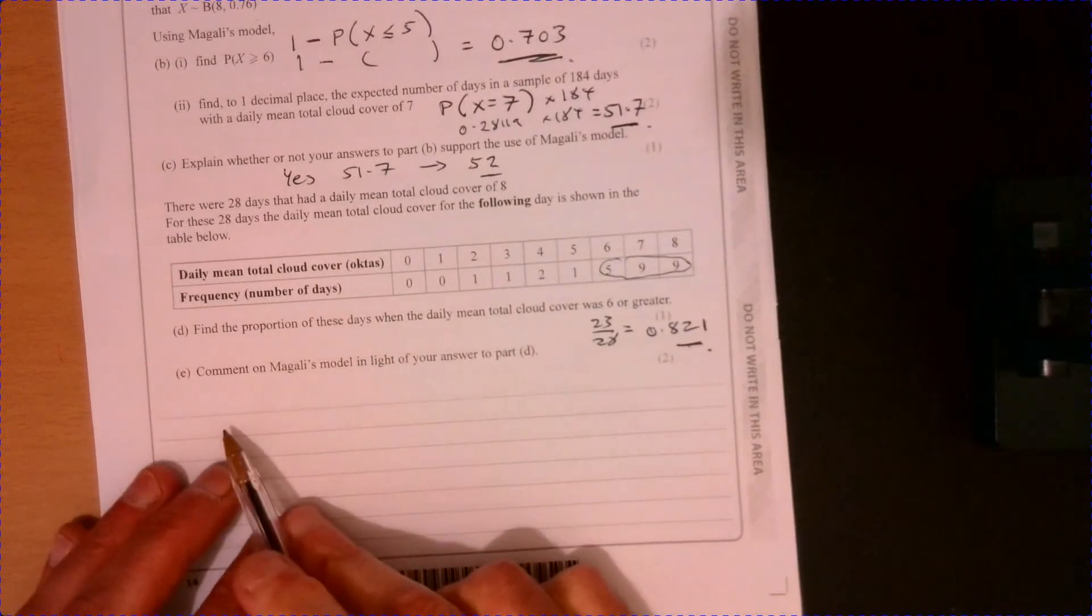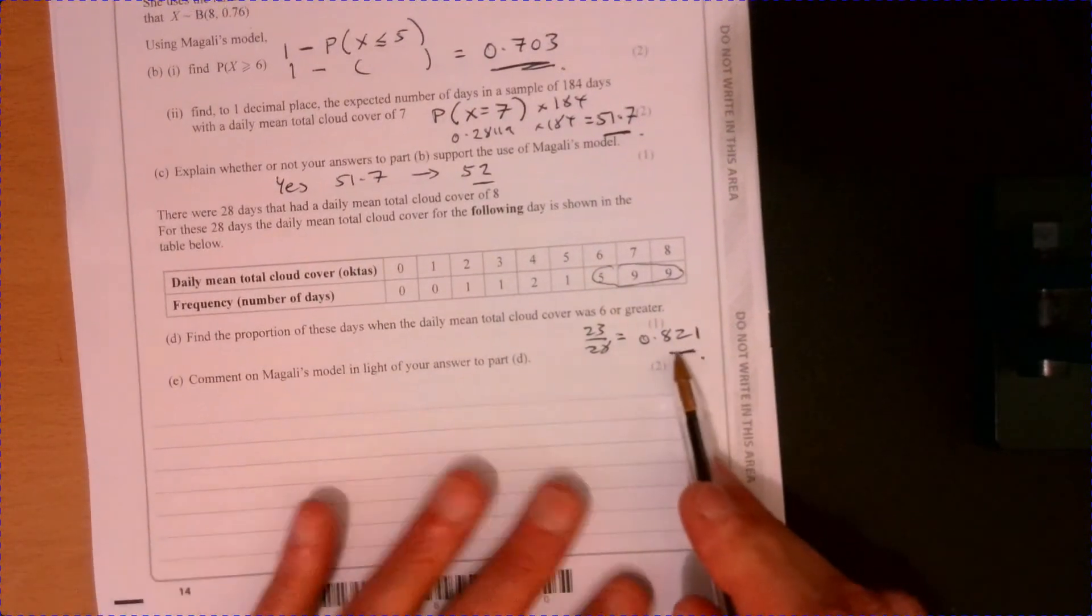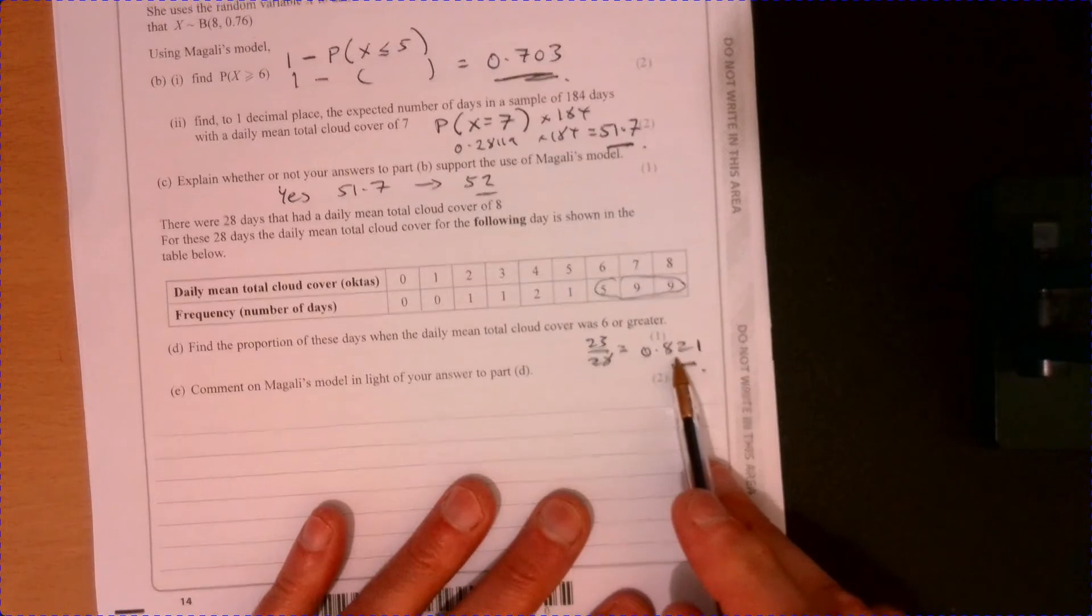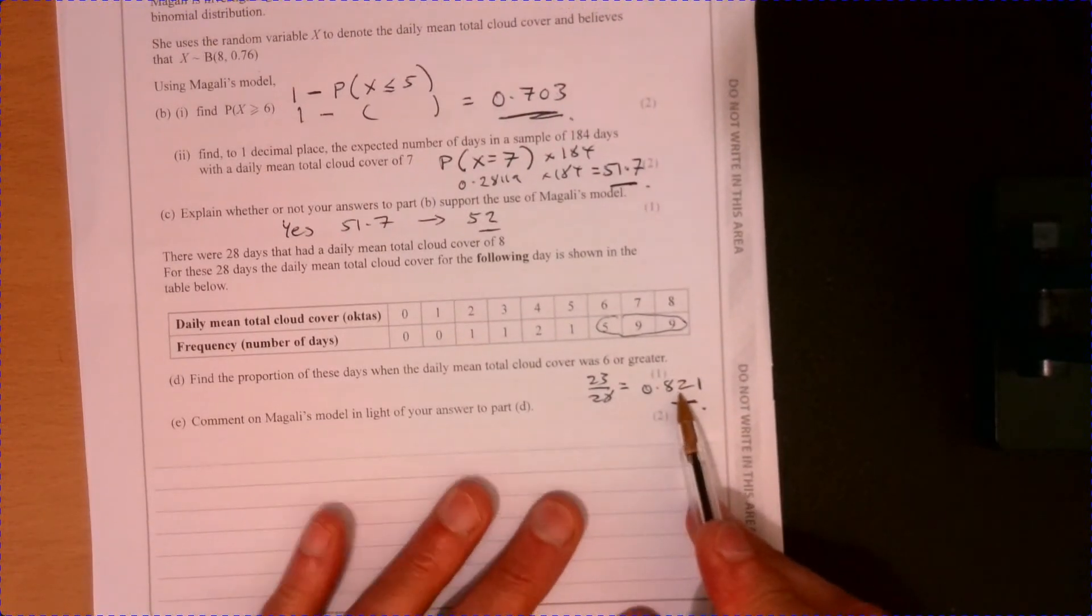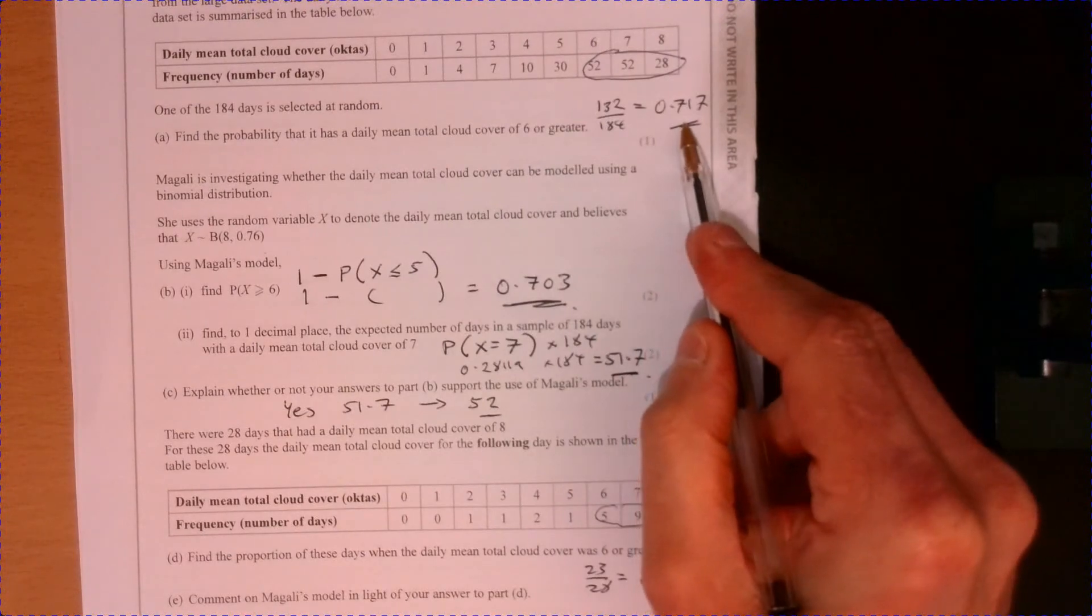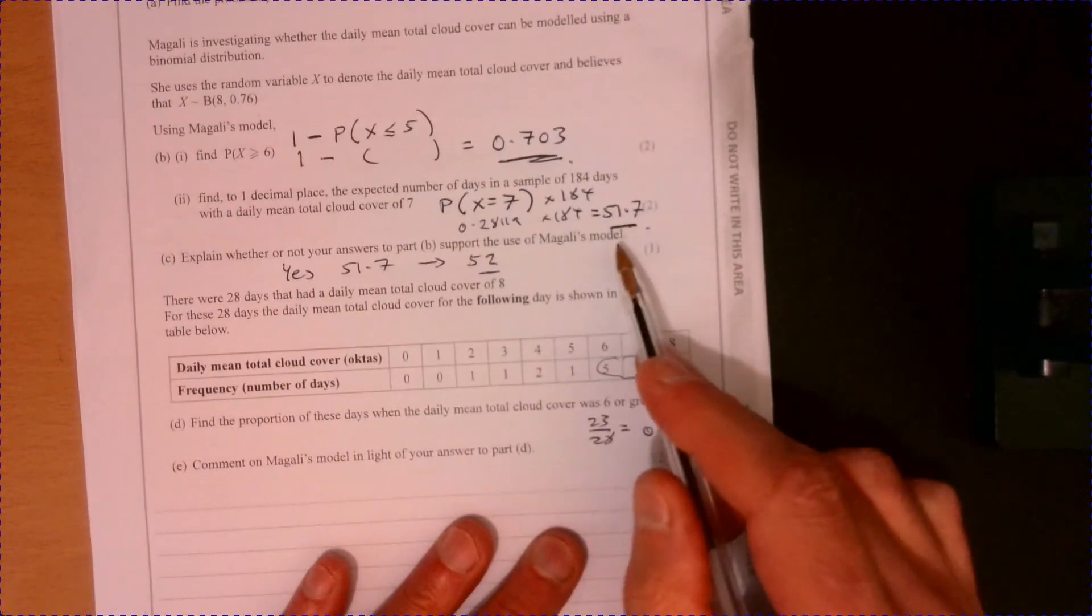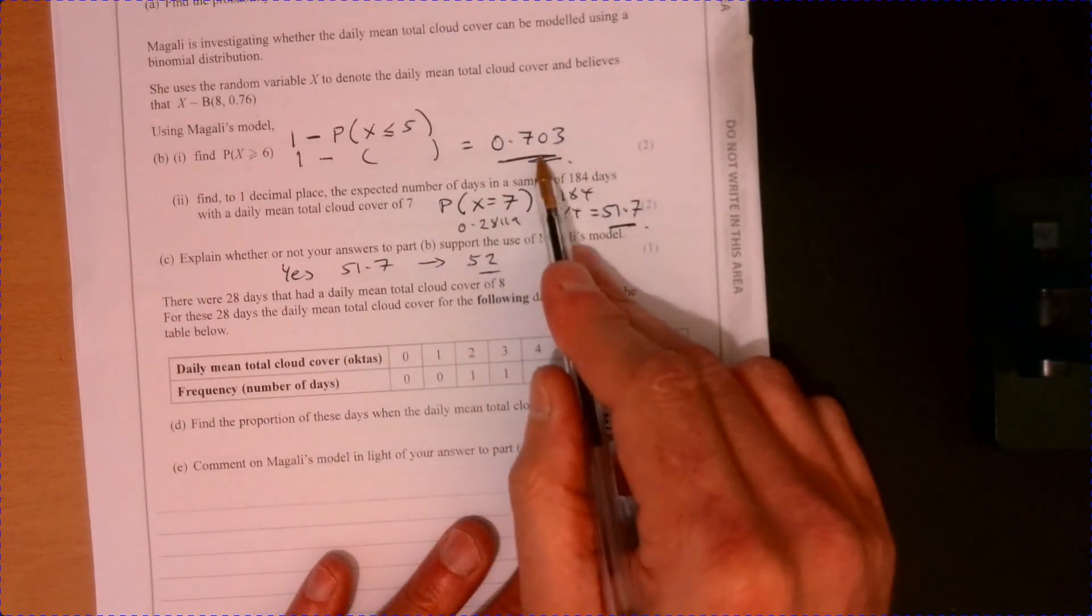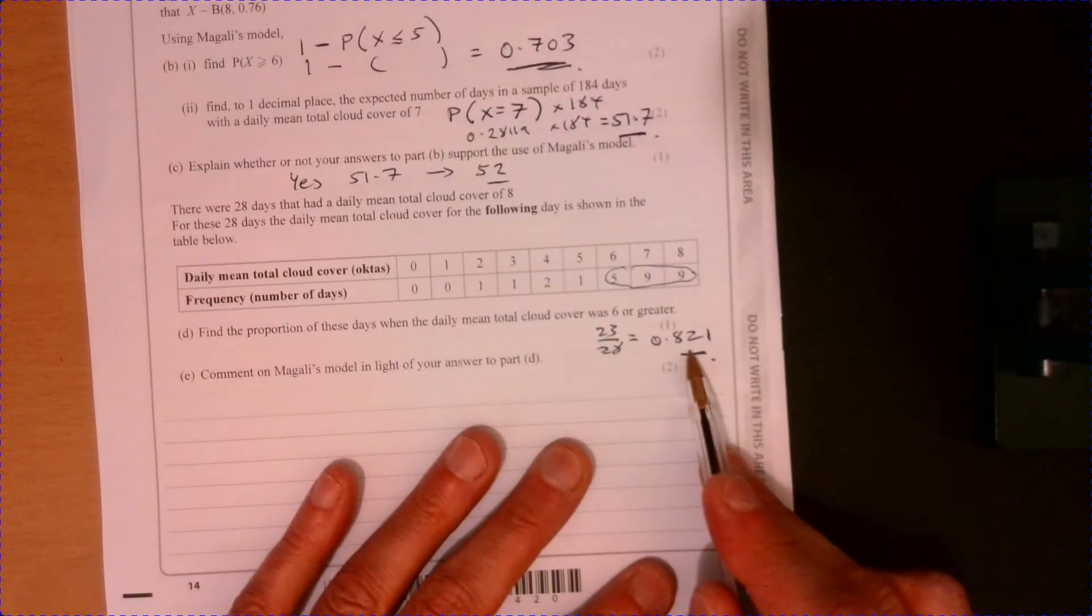Now, comment on the model in light of your answer to part D. Now, 6 or more, that's interesting, because that's that there. But when I did it up here, it was 0.717. And also referring to our model, it was 0.703. That's quite a bit different.